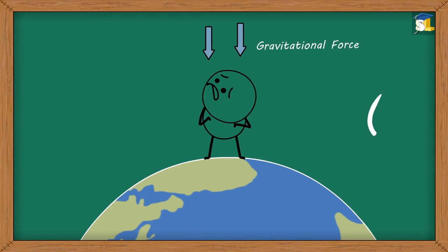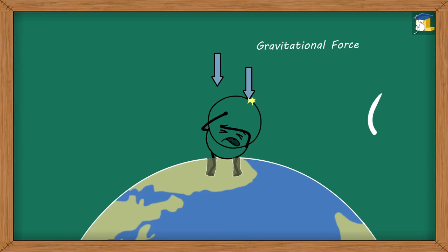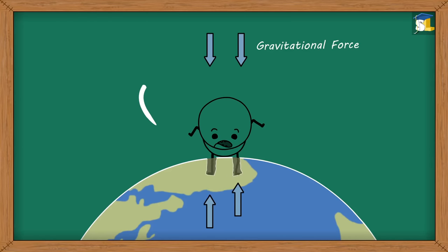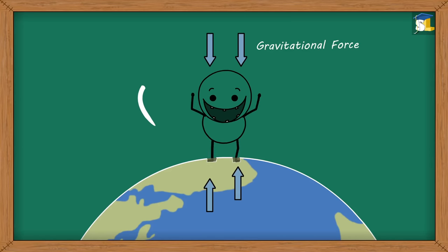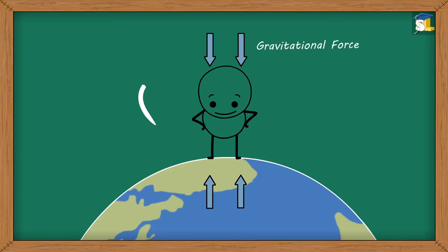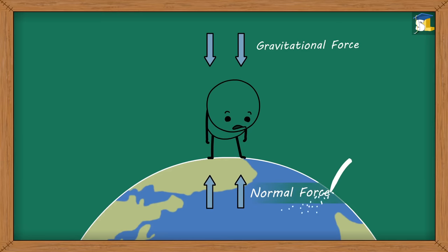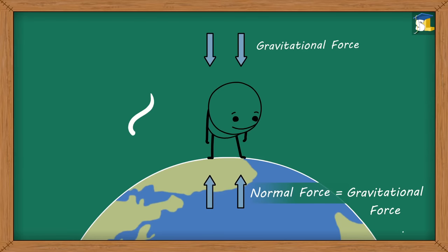We know that gravitational force is pulling us downwards. However, there is another force exerted by the ground which pushes us upwards. This force is called the normal force. It is equal to the gravitational force.